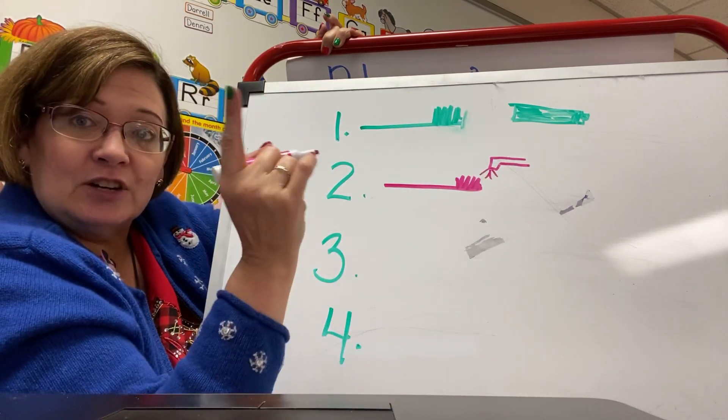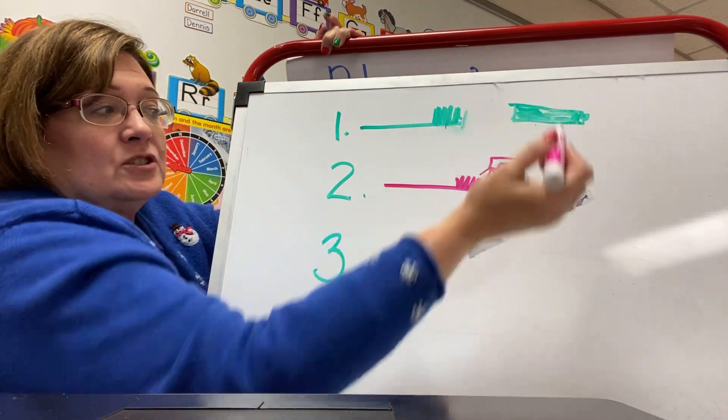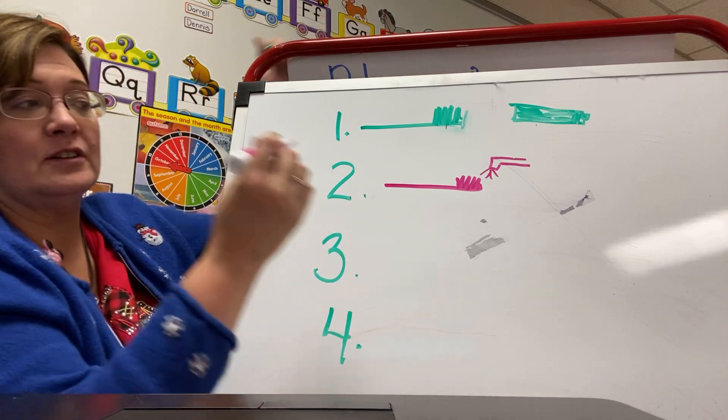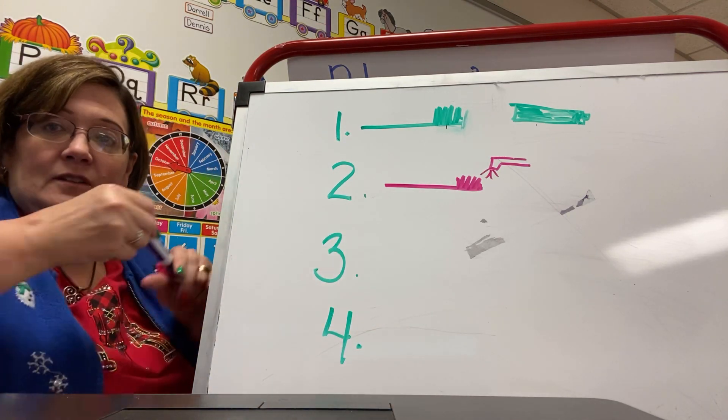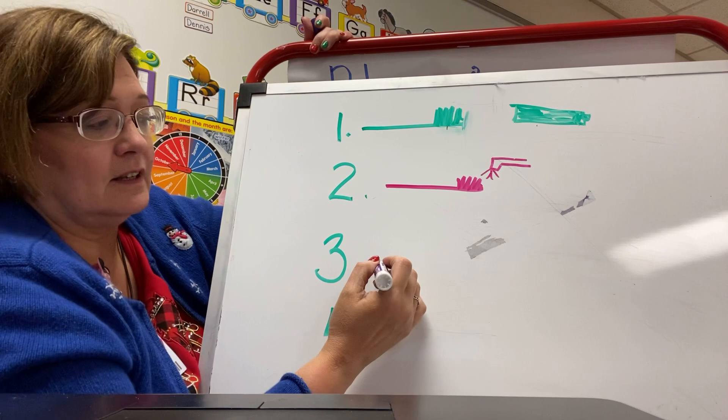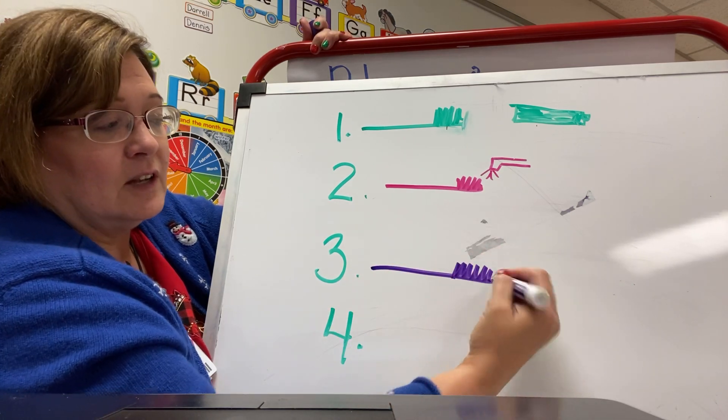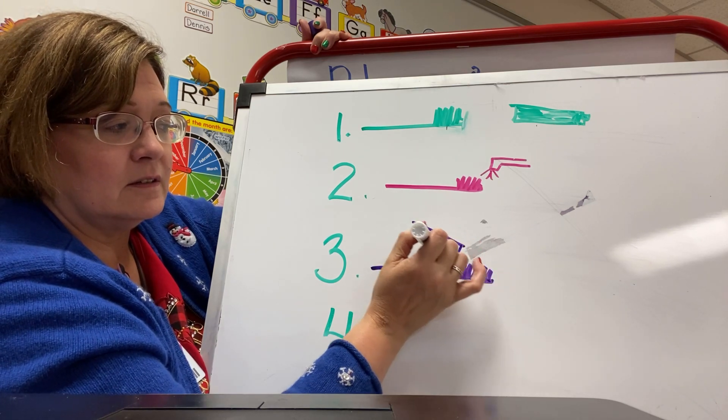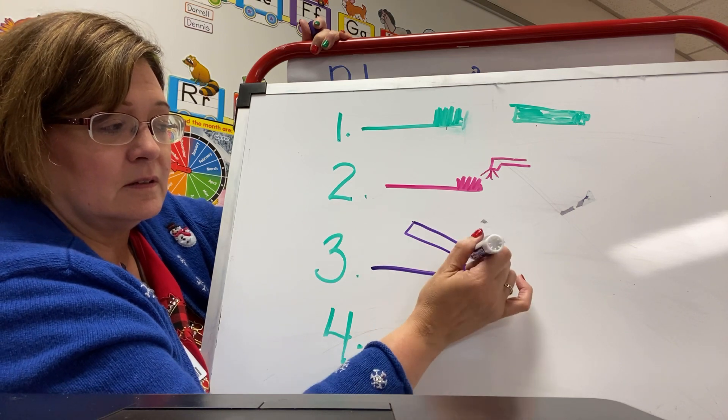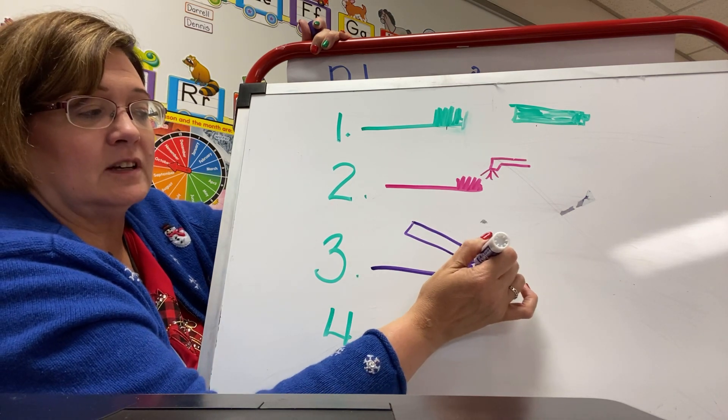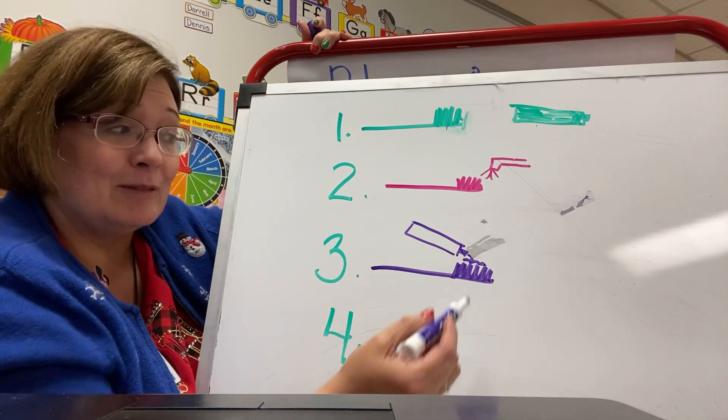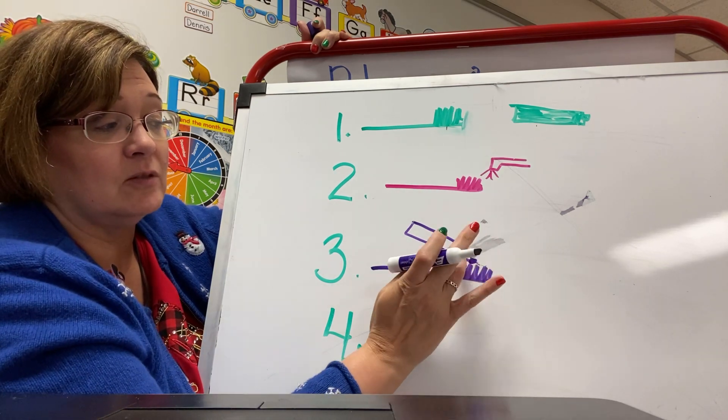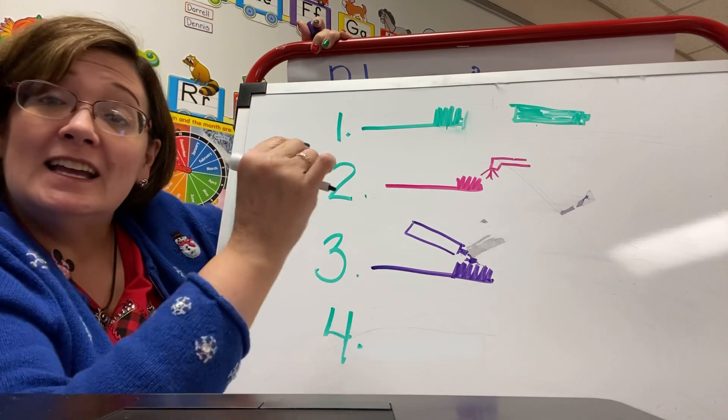So first, get out my toothbrush and toothpaste. Second, I get it wet. Third, what's the third thing? What do you think we need to do? It's the same toothbrush and what do I need to put on my toothbrush? This stuff, what's it called? Toothpaste. I've got to put my toothpaste. Now we're really just supposed to put a little, they say just a little pea-sized drop. I drew a whole lot there. So we put toothpaste on our toothbrush, that's number three.